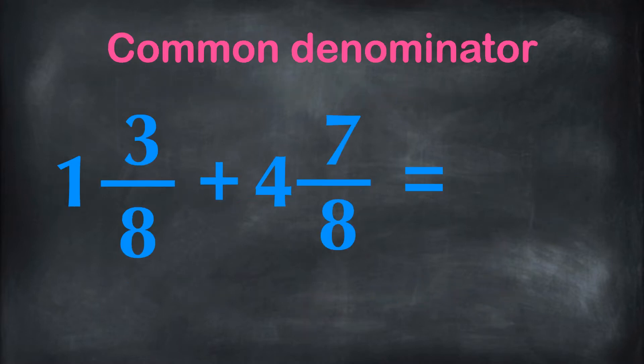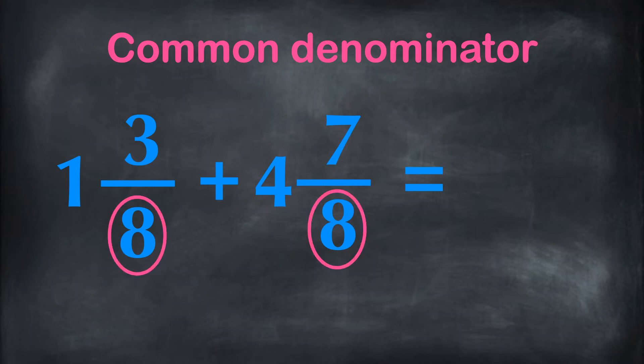Here we have a case with two mixed numbers. 1 and 3 eighths is being added with 4 and 7 eighths. These mixed numbers have the common denominator 8, so the answer will have the common denominator 8.